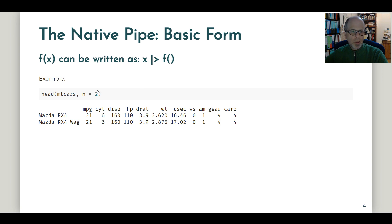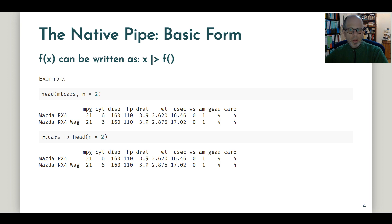And for the sake of this presentation I just display the first two rows of data using the n equals 2 parameter. And we can rewrite this and achieve exactly the same result using the pipe. Starting out with the mtcars data set using the pipe and then apply the head function with the parameter n equals 2. So that's a very simple example for the basic form.